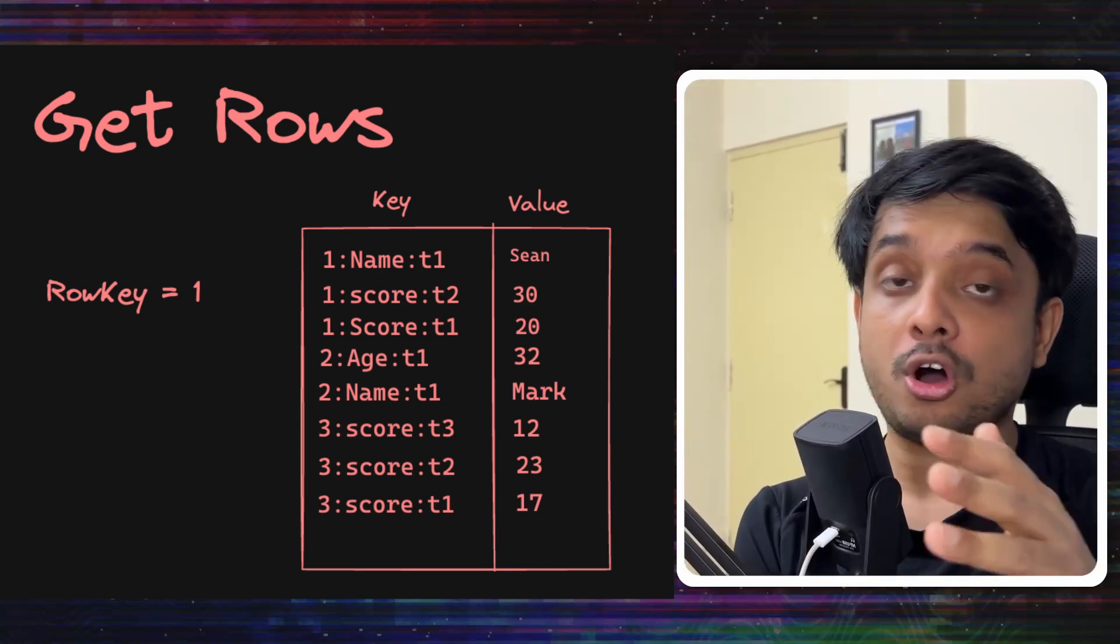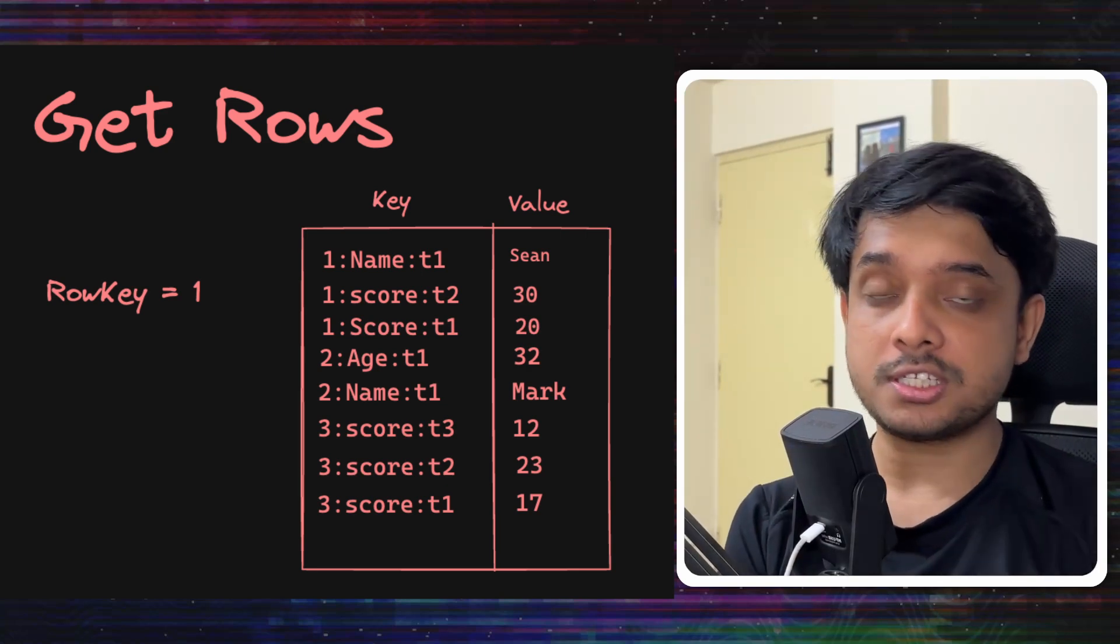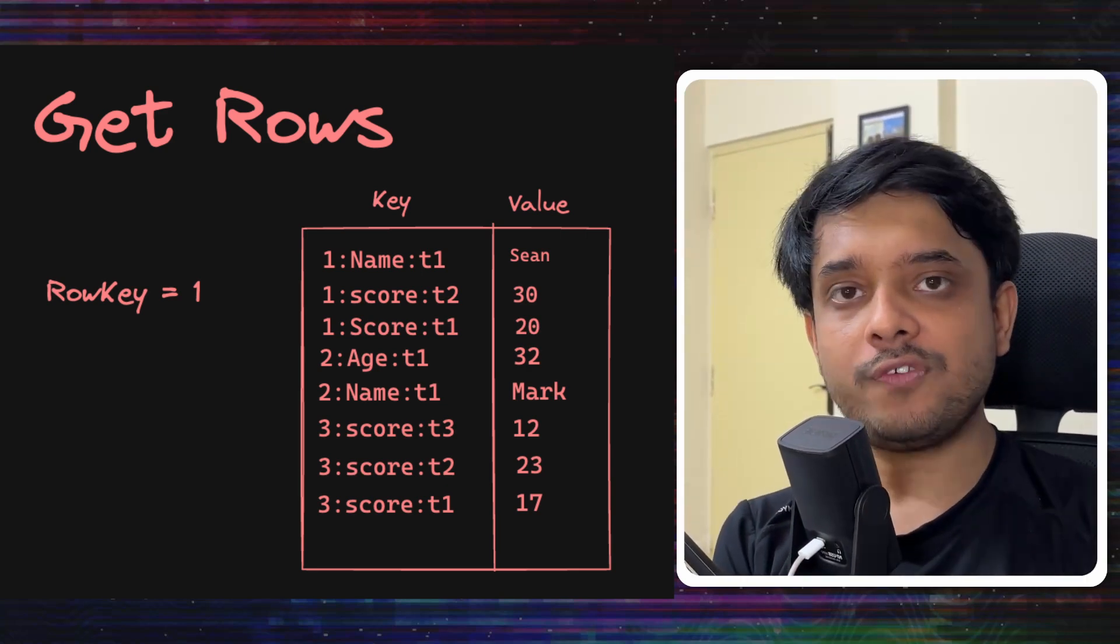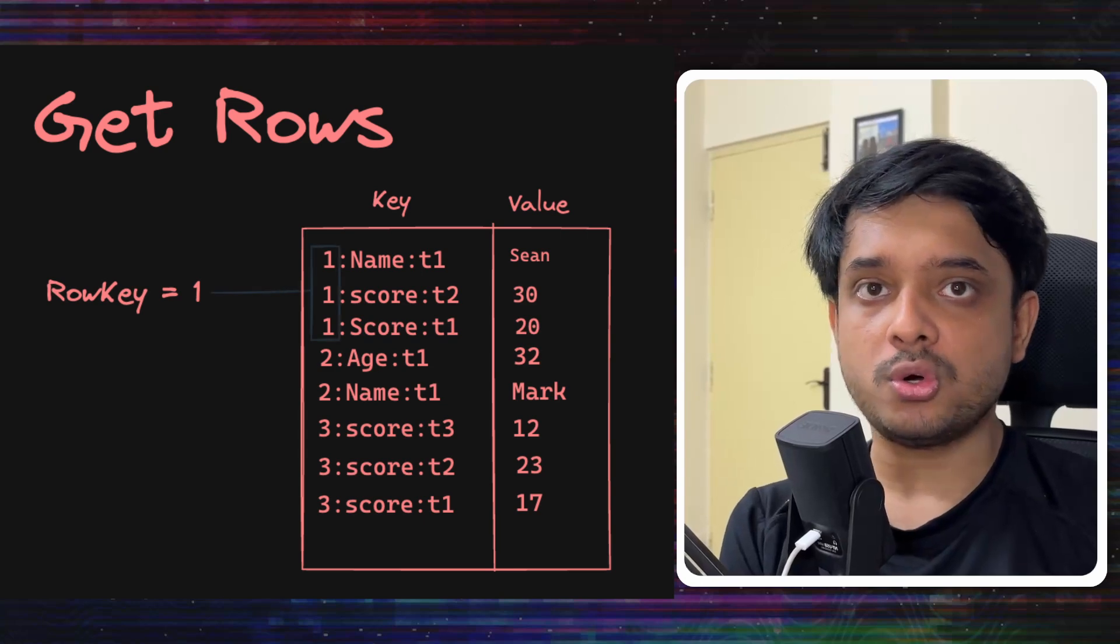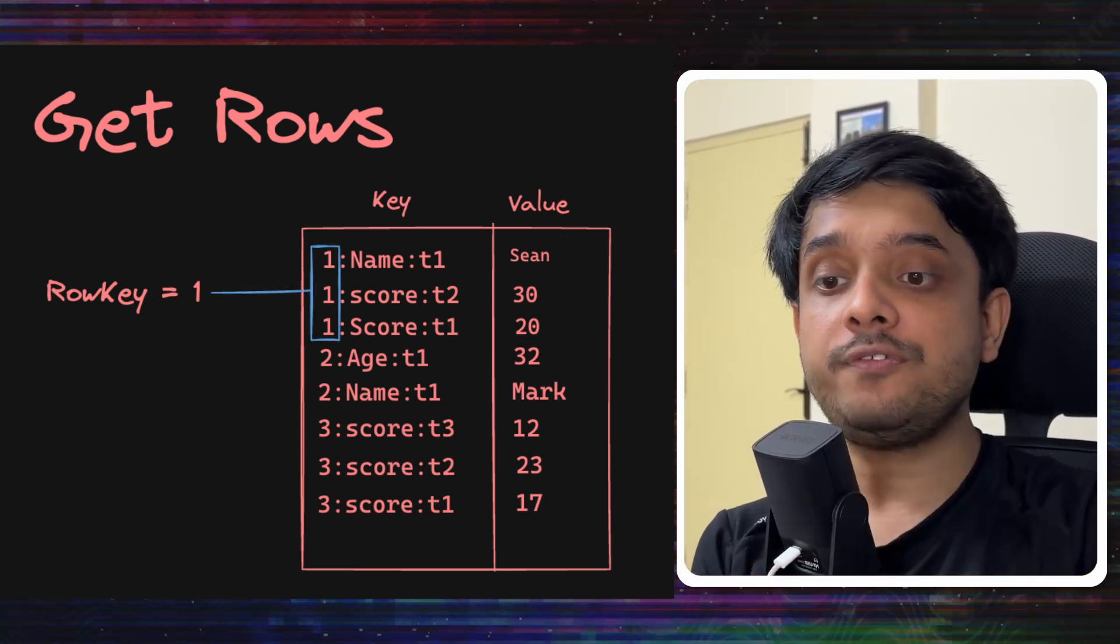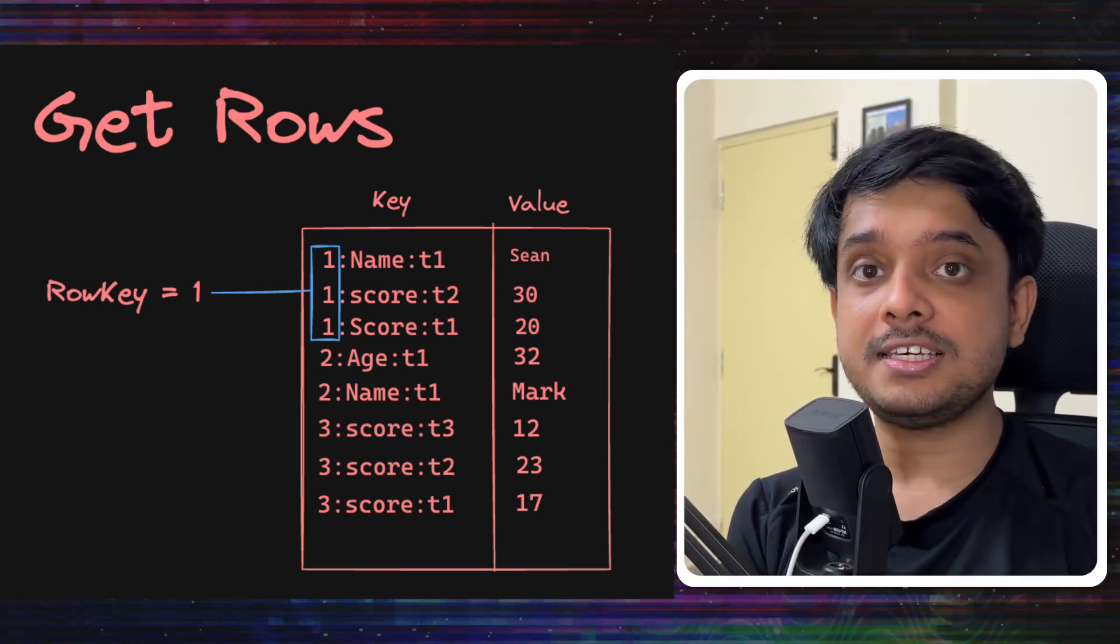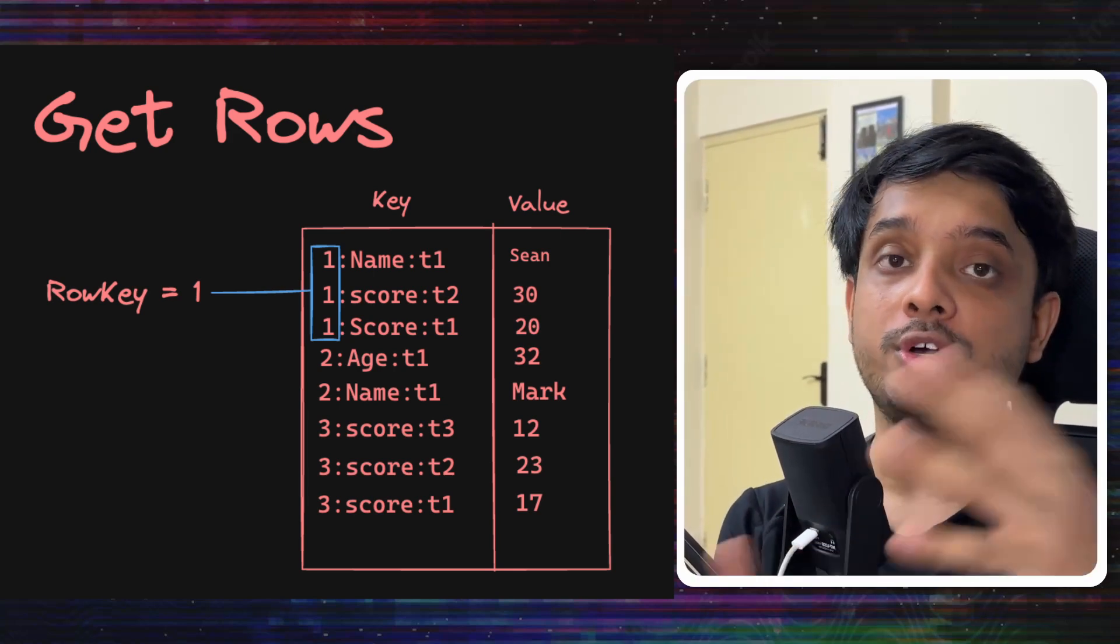It can do this very efficiently, very fast. So for row ID 1, all its values will have keys starting with 1. So we can do a prefix search with 1. So it will return all the values and all the keys from row with row key 1.